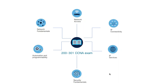The last domain, and the most important and advanced one, is automation and programmability, which includes the impact of automation on network management, controller-based and software-defined architectures, REST-based APIs, and different configuration management mechanisms such as Puppet, Chef and Ansible.